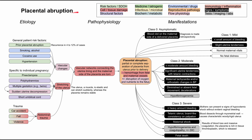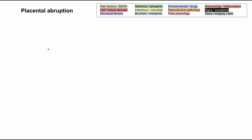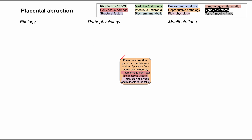This is a short video on placental abruption. I'll be talking about the etiology, the pathophysiology, and the manifestations of placental abruption. As in all of these flowcharts, each of the boxes is color-coded according to this legend in the top right, and I'll be clearing all the boxes and repopulating the flowchart as we talk about each concept. Let's go ahead and get started with the definition of placental abruption. Placental abruption is when you have partial or complete separation of the placenta from the uterus prior to delivery of the baby.